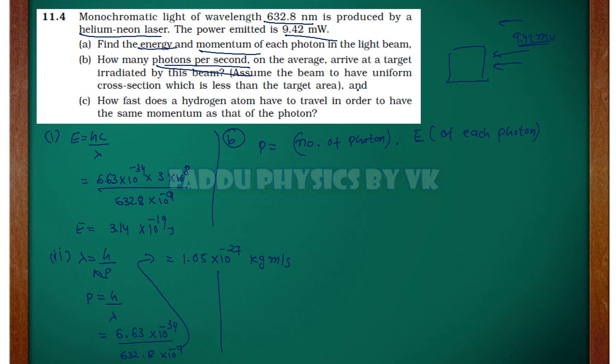Power is 9.42 milliwatt. Number of photons we have to take out. You will do P by E. How much power is here? 9.42 milliwatt in watts. And how much energy in one photon? This is 3.14 into 10 to the power minus 19. Further simplify, 3 into 10 to the power 16 photon. You will get an incident per second there.